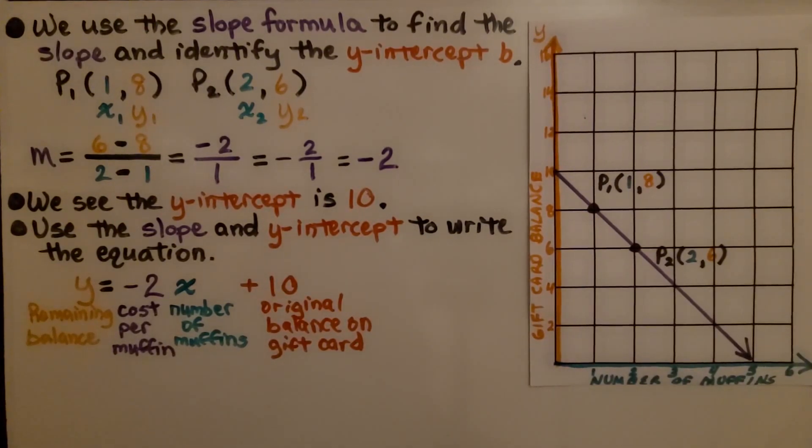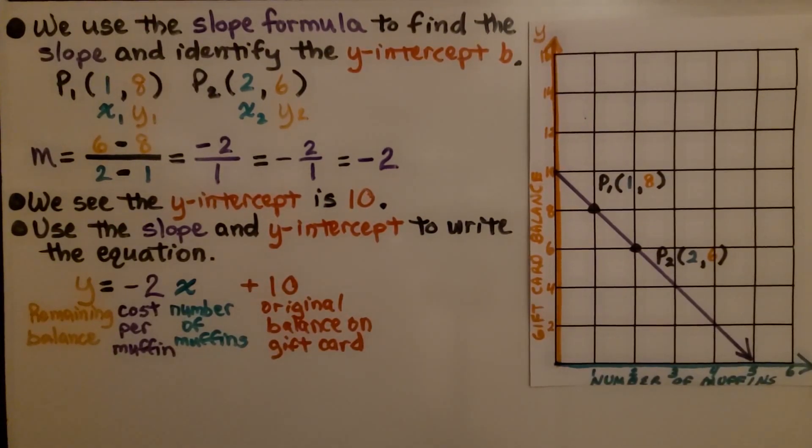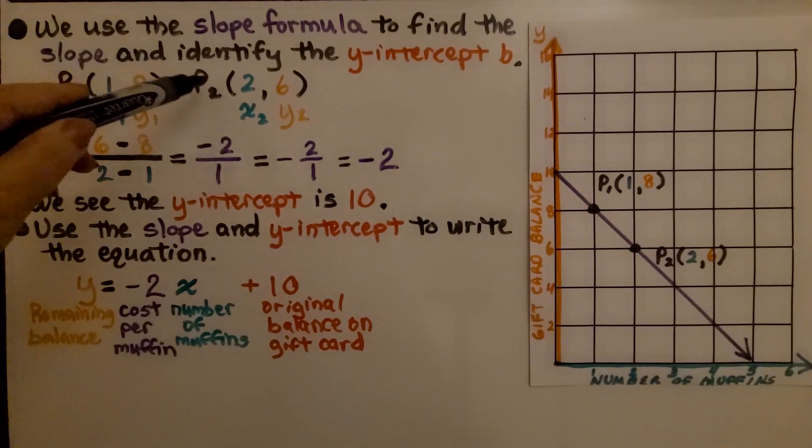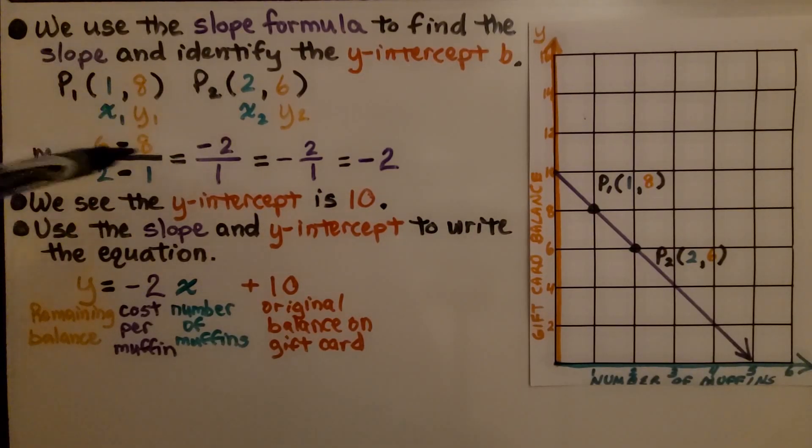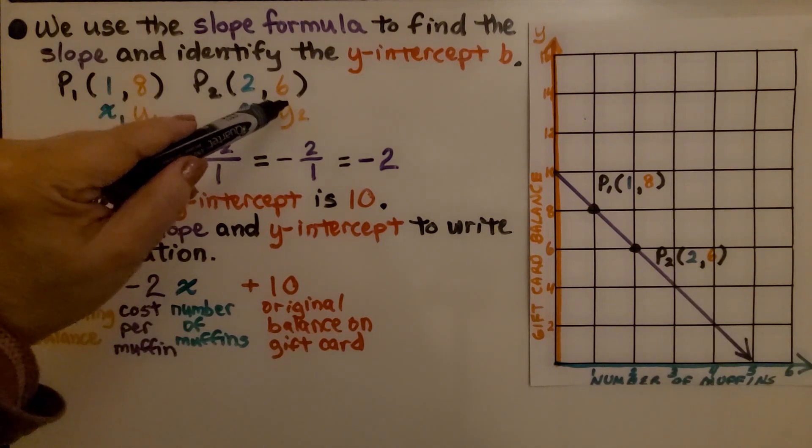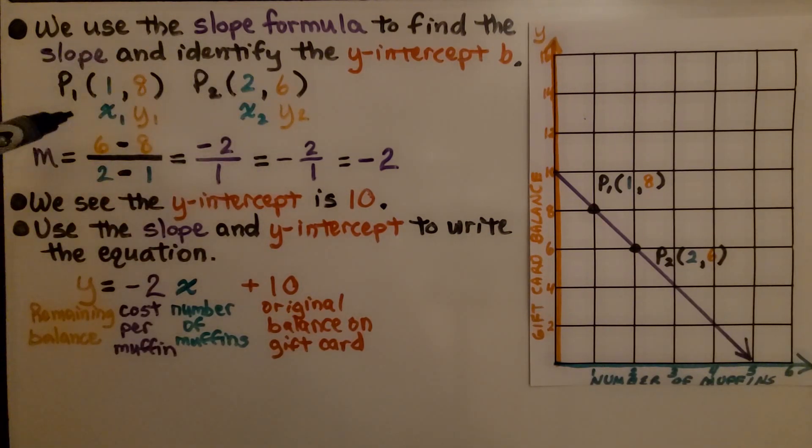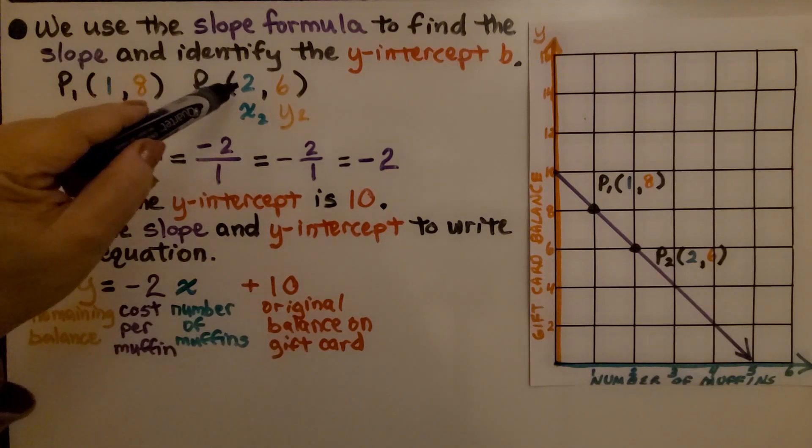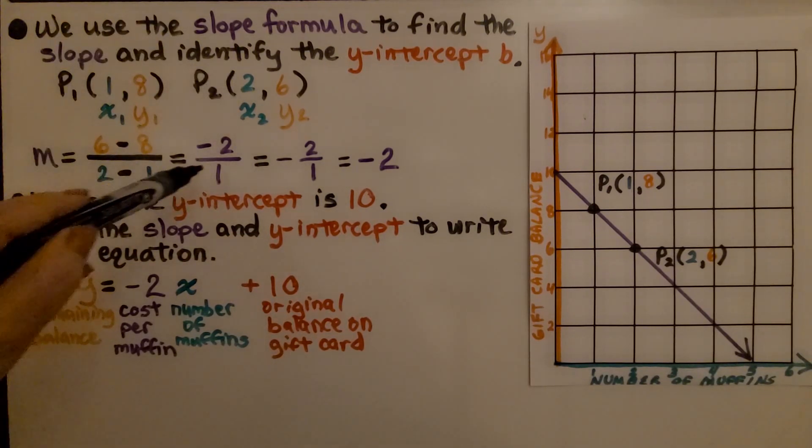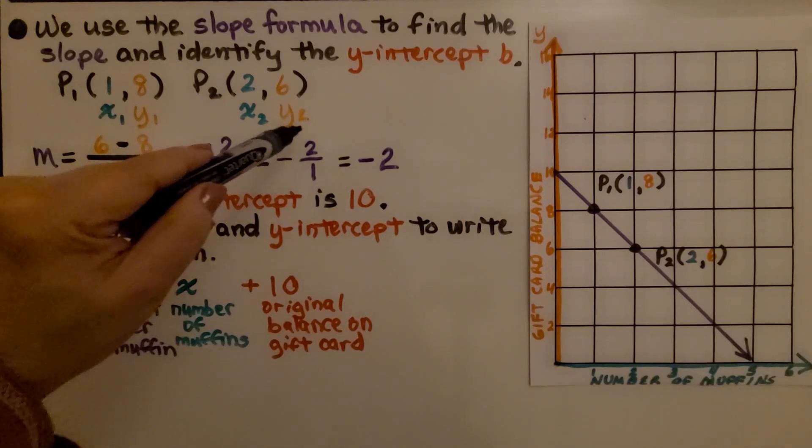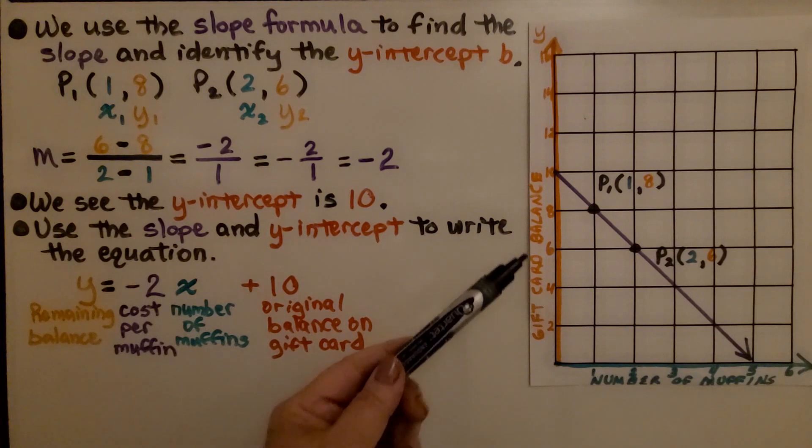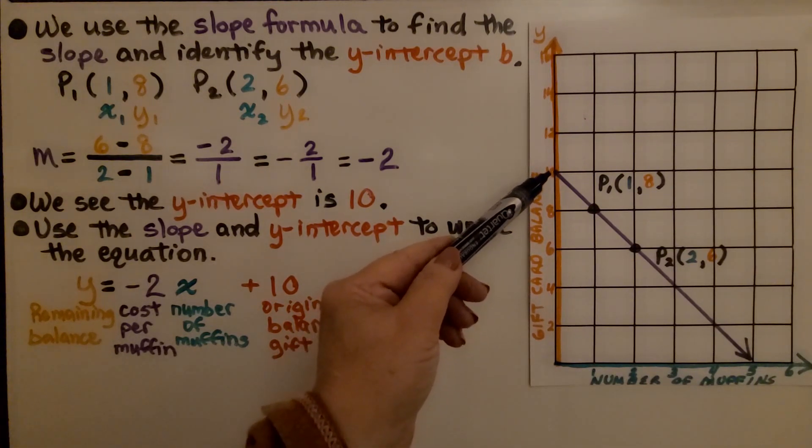We use the slope formula to find the slope and identify the y-intercept b. We have point 1 and point 2. For our y values, the second y value is 6, the first one is 8, so we have 6 minus 8, which gives us negative 2. Then we do the second x, 2, minus the first x, 1, and we get 1. That's negative 2 over 1, or negative 2.